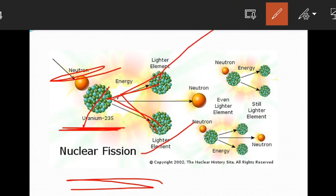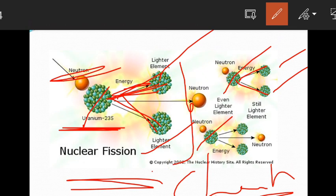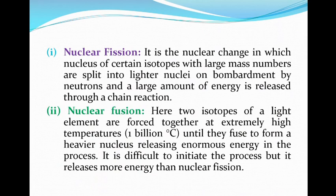This is a chain reaction: once bombardment starts in a nuclear reactor, the process continues — splitting produces 2 neutrons and 2 lighter elements, which in the next stage produce 4 elements, and so on. At every step, enormous amounts of energy are released. This is called the nuclear fission reaction.